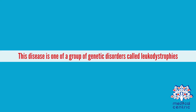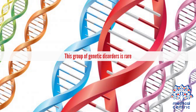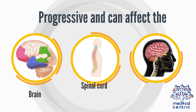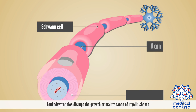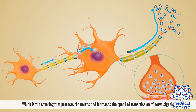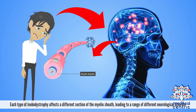This disease is one of a group of genetic disorders called leukodystrophies. This group of genetic disorders is rare, progressive, and can affect the brain, spinal cord, and often the nerves outside the central nervous system. Leukodystrophies disrupt the growth or maintenance of the myelin sheath, which is the covering that protects the nerves and increases the speed of transmission of nerve signals. Each type of leukodystrophy affects a different section of the myelin sheath, leading to a range of different neurological disorders.